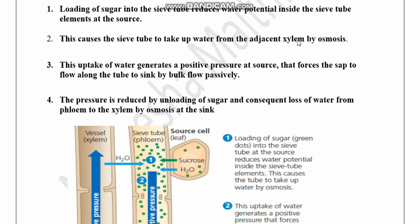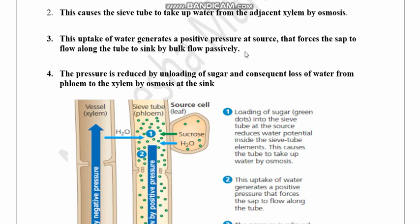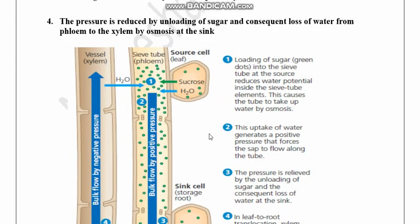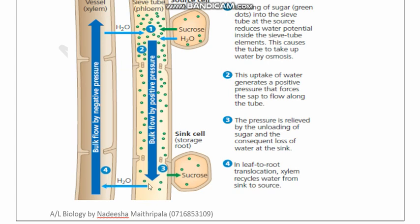The four main stages of phloem translocation are: first, loading of sugar into the sieve tube element reduces water potential at the source; second, the sieve tube element takes up water from adjacent xylem by osmosis and generates positive pressure at the source; third, this positive pressure forces phloem sap to flow along the sieve tube to the sink by bulk flow passively; fourth, at the sink, unloading of sugar creates low pressure and water moves to the xylem by osmosis. Phloem sap movement from source to sink by bulk flow does not use ATP — it is a passive movement.